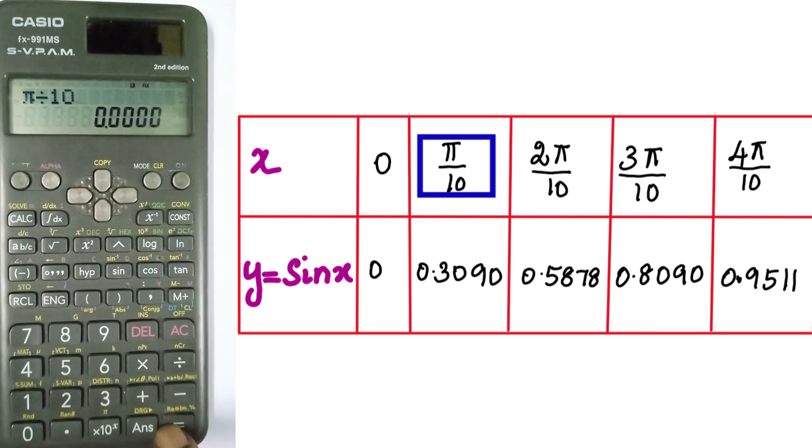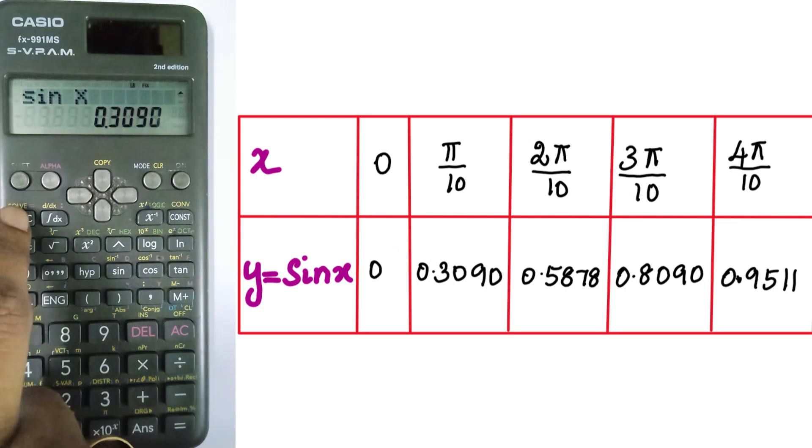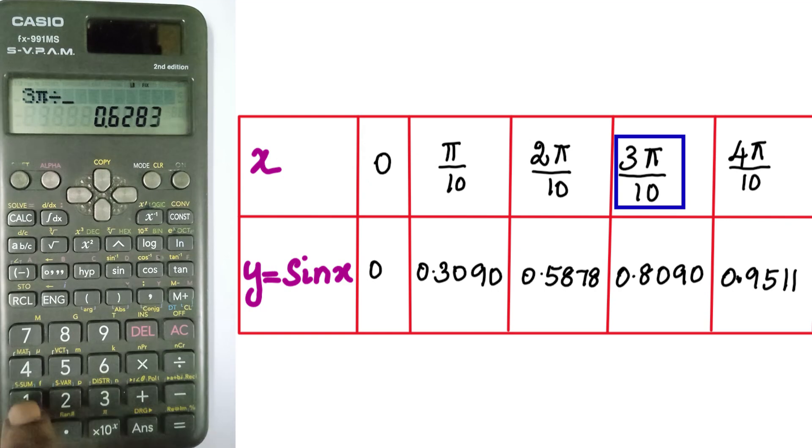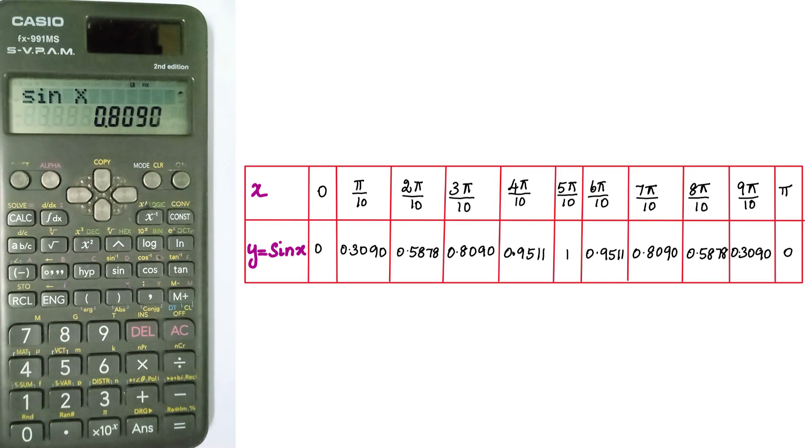Enter 2 times π divided by 10, which gives 0.5878. Then calculate 3 times π by 10, which gives 0.8090. Then 4 times π by 10 gives 0.9511. We calculate all the values this way through y10.